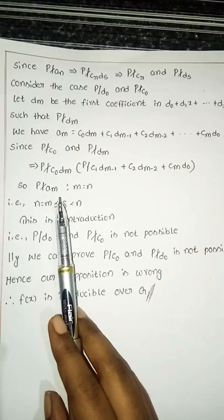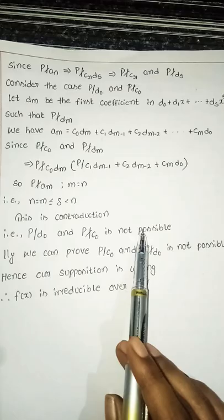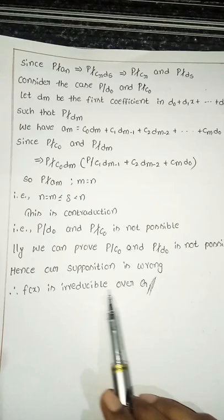This means m equals n, which is a contradiction, because our assumption implied p should divide all coefficients up to a(n-1). So our assumption is wrong. Therefore, f(x) is irreducible over Q. Hence, Eisenstein's criterion is proved. I hope you understand this. Thank you.